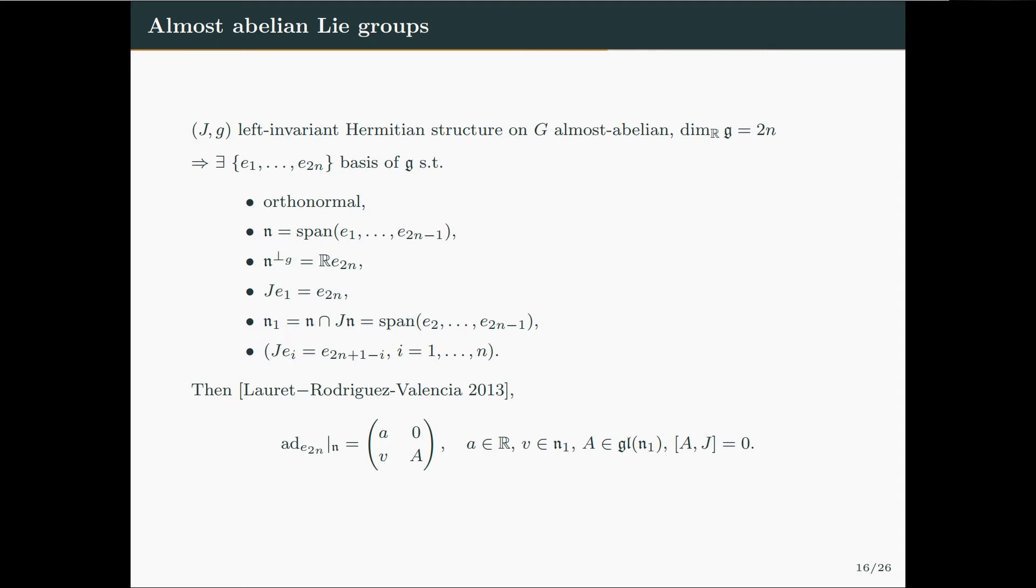Okay, now assume J_G to be a left-invariant Hermitian structure on the almost abelian Lie group G. Assume that the real dimension of G is 2n. Then one can consider a basis e_1 to e_2n of the Lie algebra G, such that first it is orthonormal, the first 2n minus 1 vectors span the abelian ideal n, so that the orthogonal complement of n is exactly the span of e_2n. Then one can assume that e_1 is mapped by J into e_2n, so that the vectors going from e_2 to e_2n minus 1 span the space n intersecting with Jn. For simplicity, one can also assume that J behaves in this way.